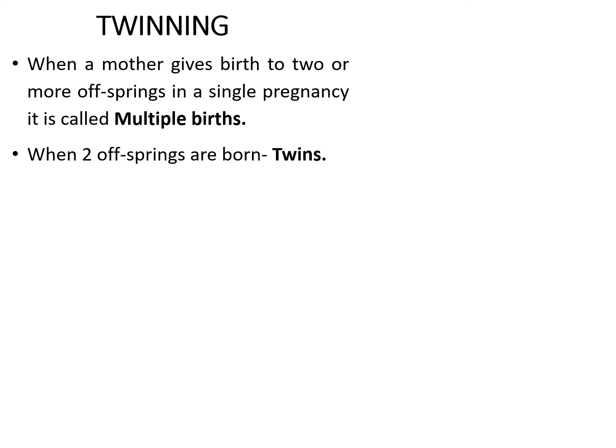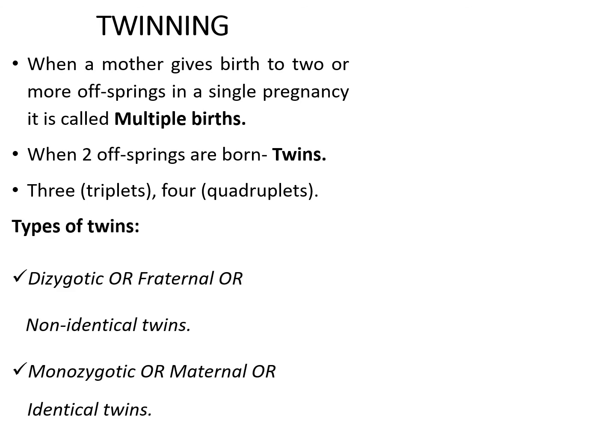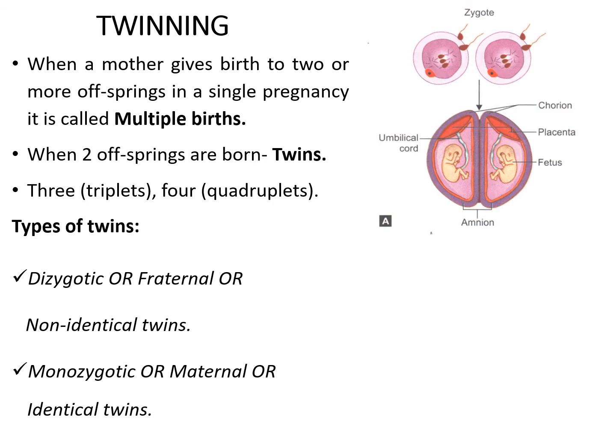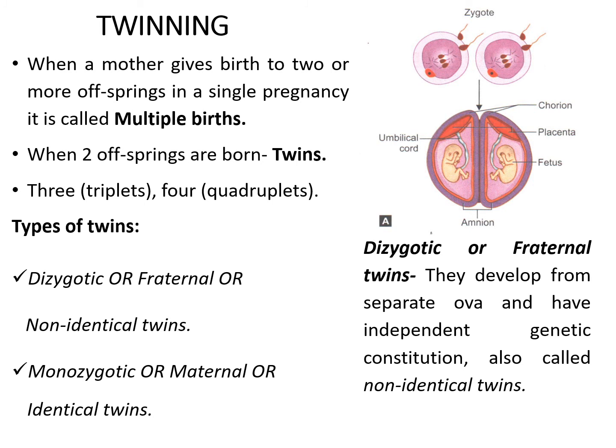When a mother gives birth to two or more offspring in a single pregnancy, it is called multiple births. When two offspring are born, they are called twins. It can be three — triplets — or four — quadruplets. With assisted reproductive techniques, the incidence of multiple births is increasing. Types of twins: dizygotic or fraternal or non-identical twins are produced by fertilization of two different ova by two different sperms. They are phenotypically and genotypically different, may have different genders, and have two different gestational sacs and amniotic cavities — called bichorial and biamniotic.